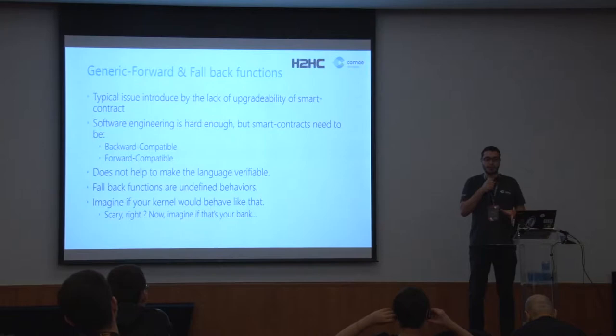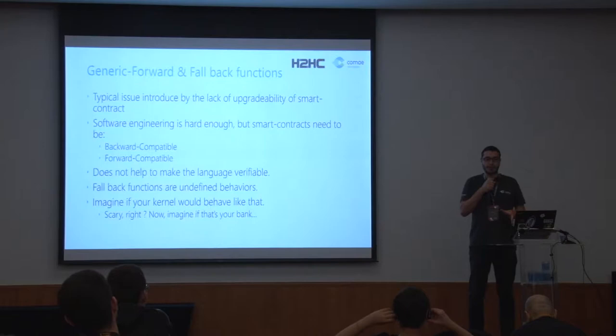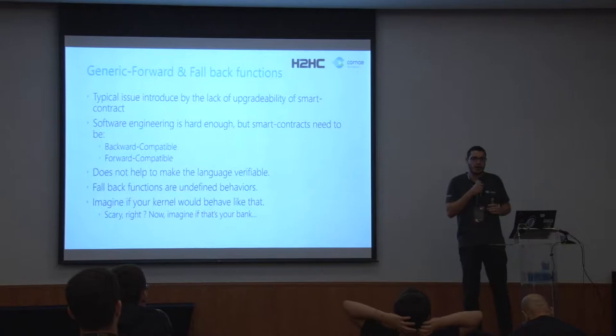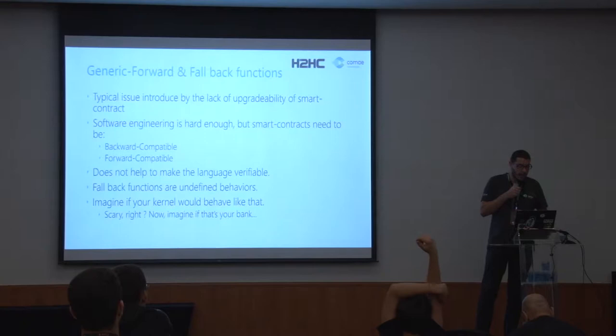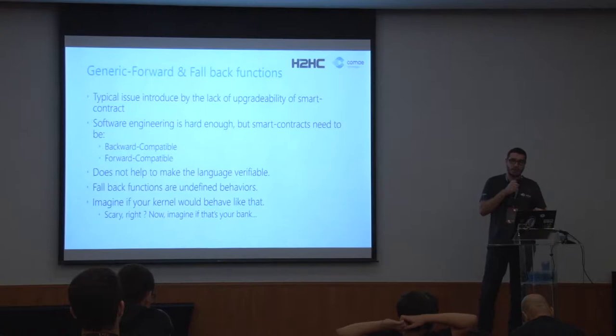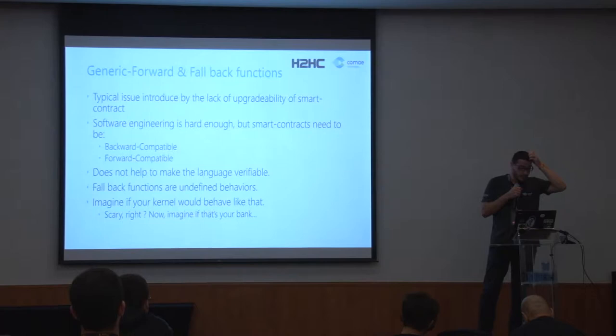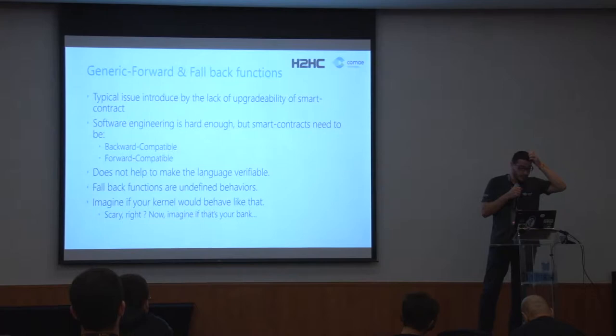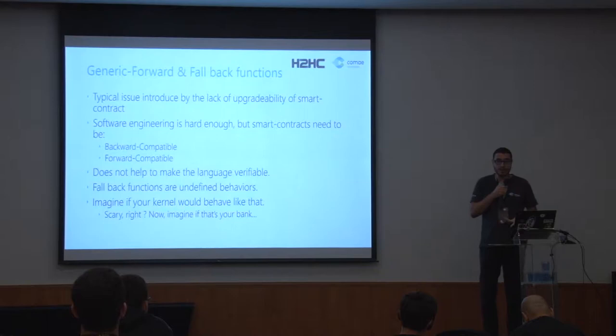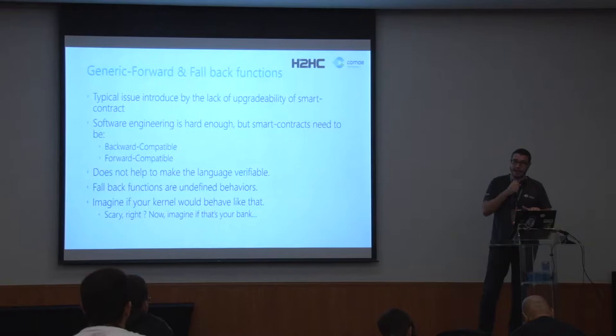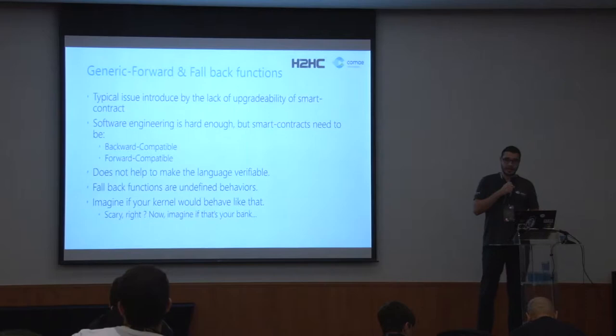If you think about threat modeling for your code, it makes it more difficult because it means you have to try to picture what you're going to have in the future, which is pretty much impossible. And if you're going to try to make the language verifiable, that gives you a big question mark. Because you cannot really upgrade smart contracts, you have to use fallback functions. Imagine if you had a kernel you could not patch — you'd be dependent on a legacy kernel calling a new version of the kernel. That would be pretty scary.